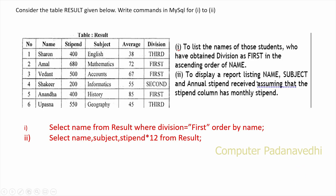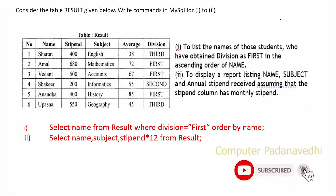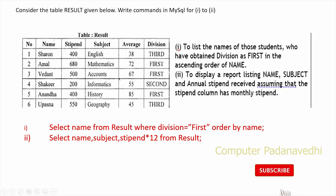To display a report listing name, subject, and annual stipend — assuming the stipend column has monthly stipend — we select: SELECT name, subject, stipend * 12 AS annual_stipend FROM result. Stipend multiplied by 12 gives the annual stipend.